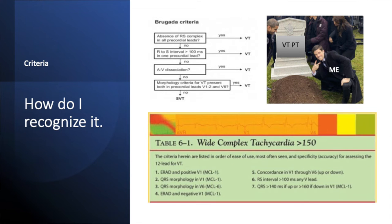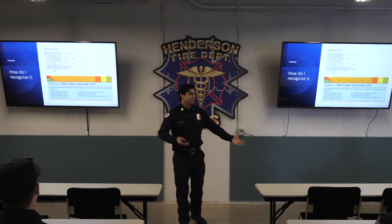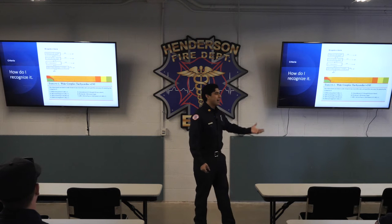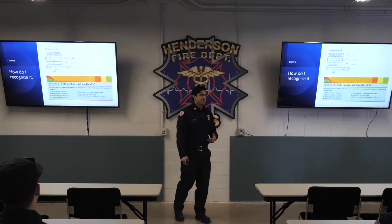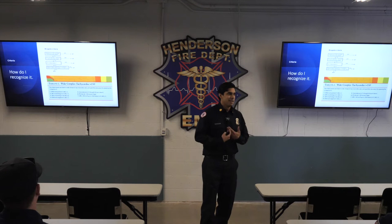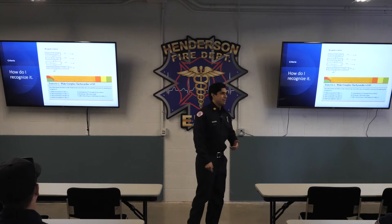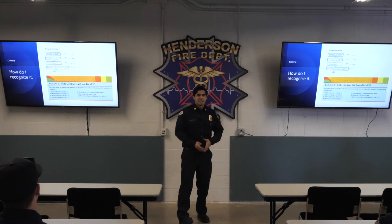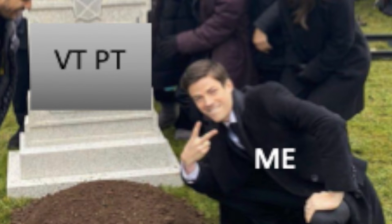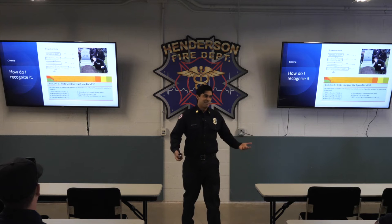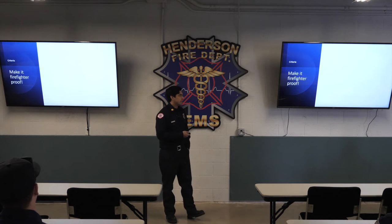How do you recognize it? There are a ton of criteria — Brugada criteria, table 6-1 from your paramedic book. This table changes every few years. Brugada criteria has nine steps now in its current version, versus four in 1991. The problem is these are too hard to recall quickly in the field. So you end up overwhelmed. What do we do instead?